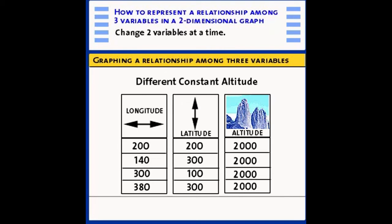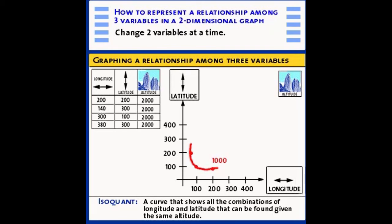Let's start with a combination of 200 and 200 with a longitude of 200 and a latitude of 200. We're going to get this point right here and that has an altitude of 2,000. We also get an altitude of 2,000 with a longitude of 140 and a latitude of 300. That would be this point right here. 300 and 100 gives us another combination with an altitude of 2,000. And finally, one last point. Here, at a latitude of 300 and a longitude of 380, we also have an altitude of 2,000.